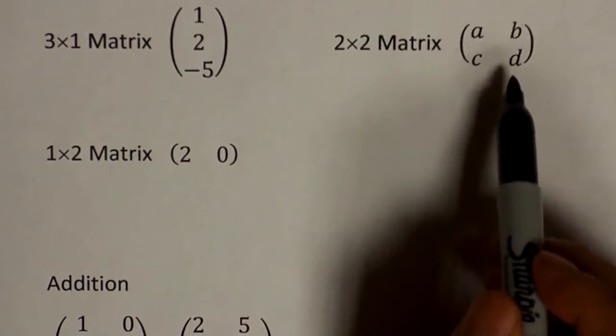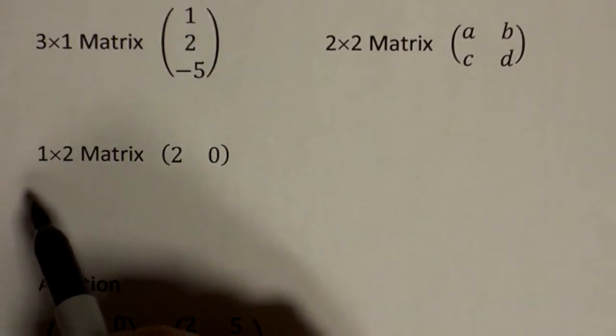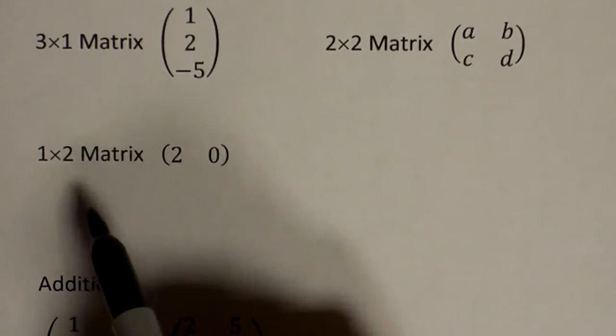This one, two rows, two columns, so it's a two by two matrix. Single row, two columns, one by two matrix.